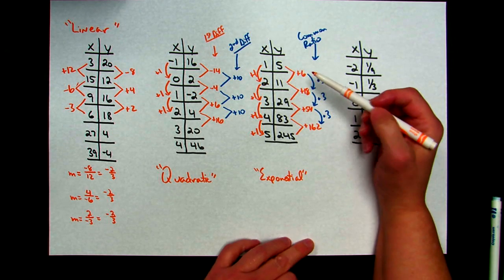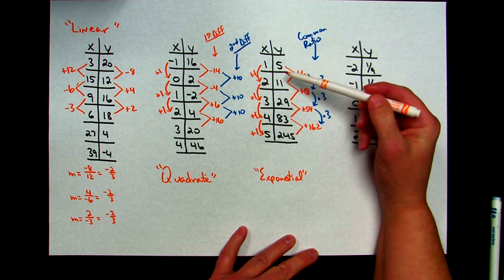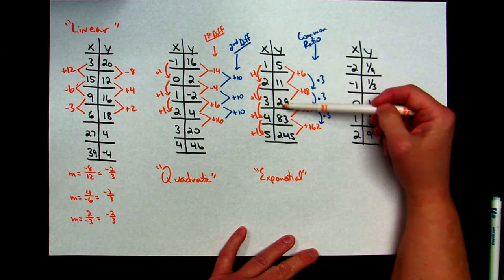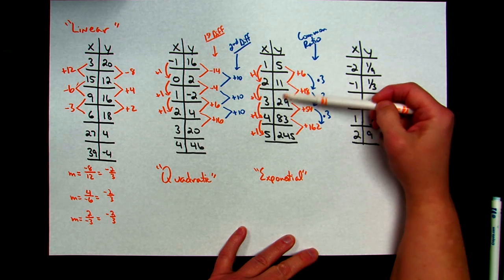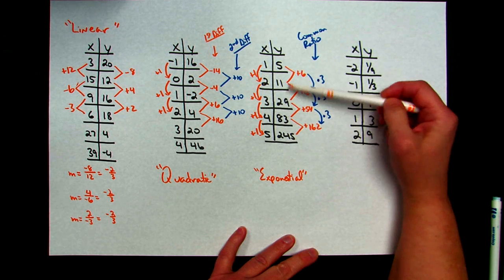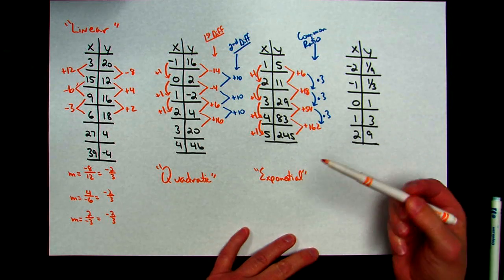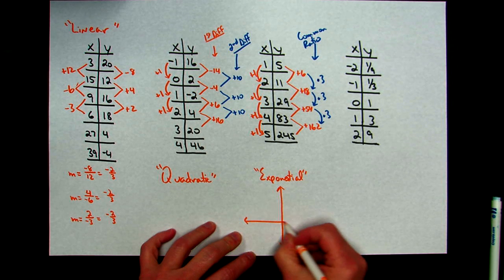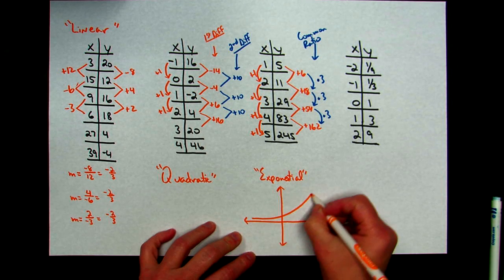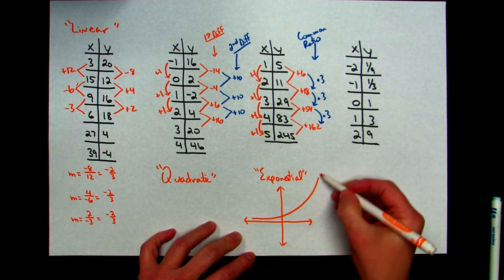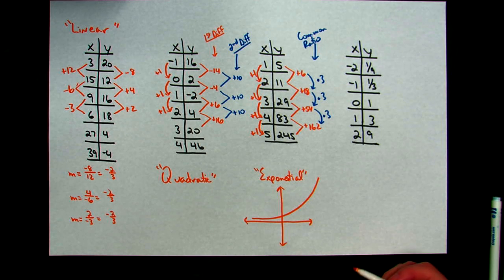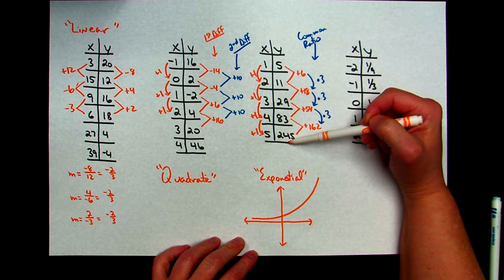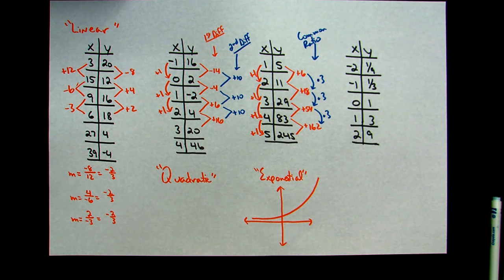Another thing that might be a dead giveaway for an exponential function: if you look at the y-values, they are growing very large very quickly. That kind of indicates an exponential function, because if you recall, an exponential growth function has a graph that gets really steep very quickly. That right off the bat might have given you a hint that you were looking at an exponential function.